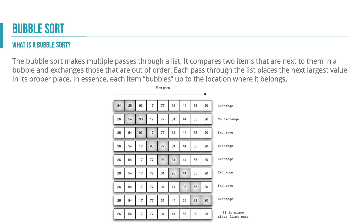There are n minus one bubbles in a pass, meaning the number of items in the list minus one gives you the number of bubbles needed. So if there are 20 items in our list, there are 19 bubbles in each pass. There are also n minus one passes required in a worst case scenario - so we might have 19 bubbles in each pass repeated 19 times.